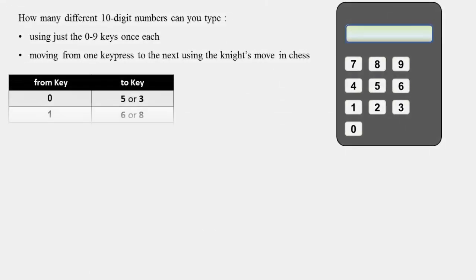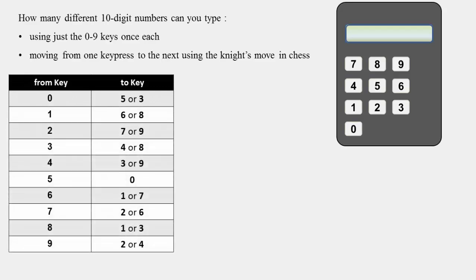If you follow the knight's pattern, from each key you can move to two different keys, except for the key 5 which can only connect to the key 0.